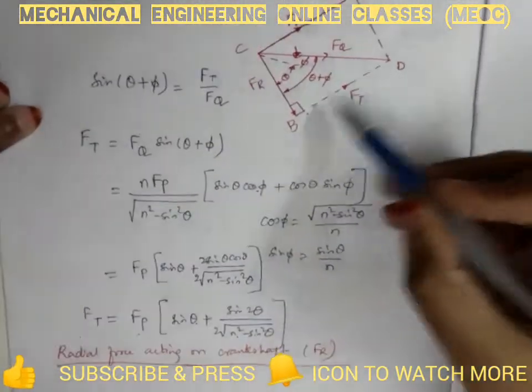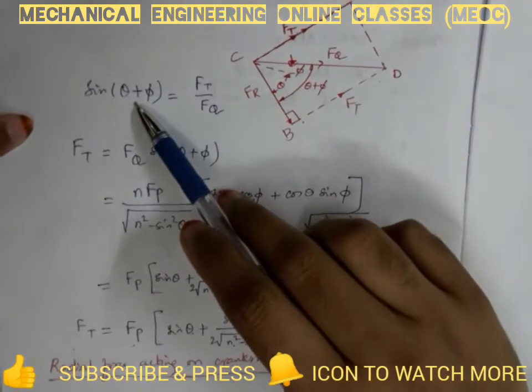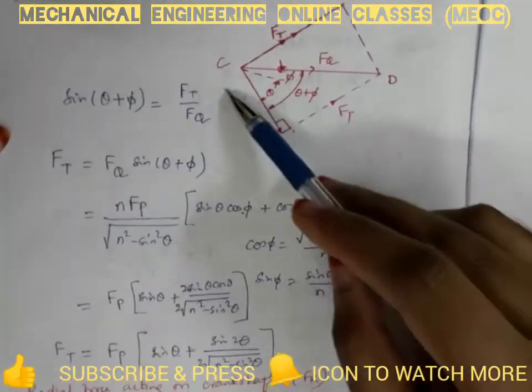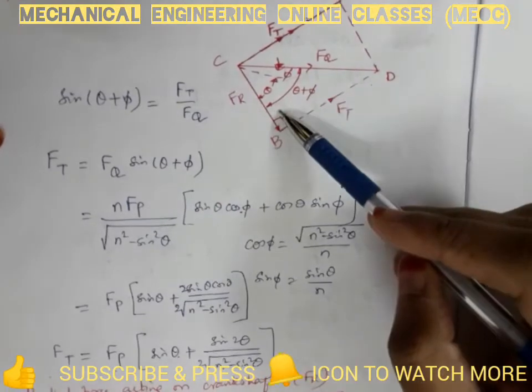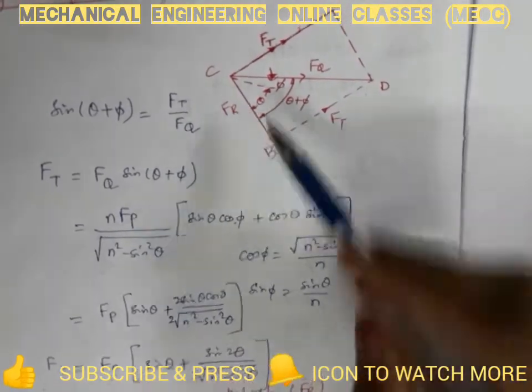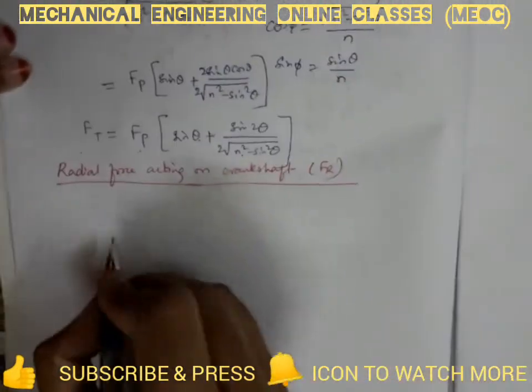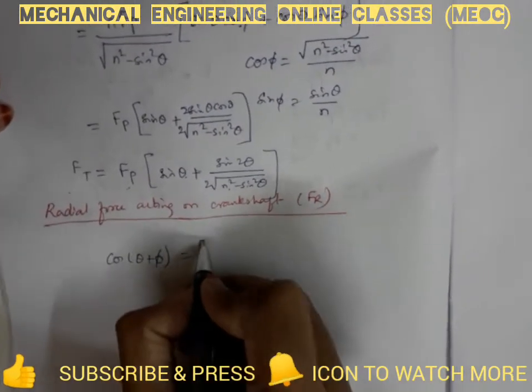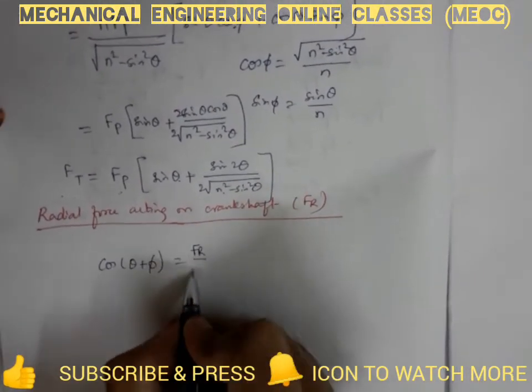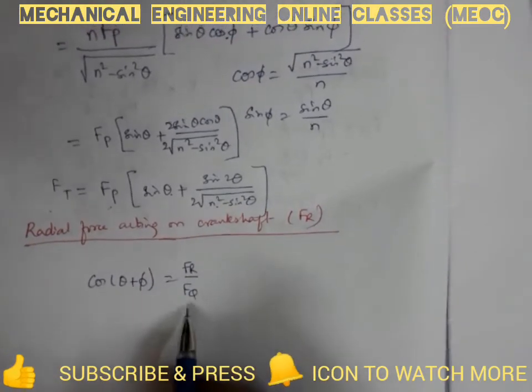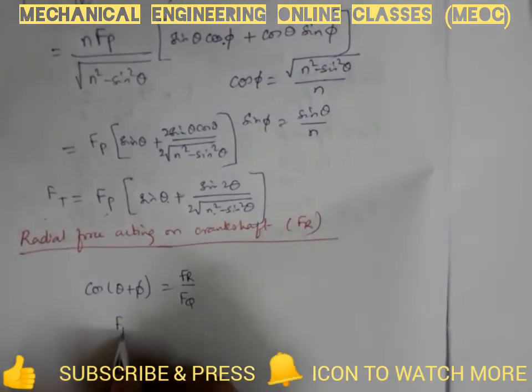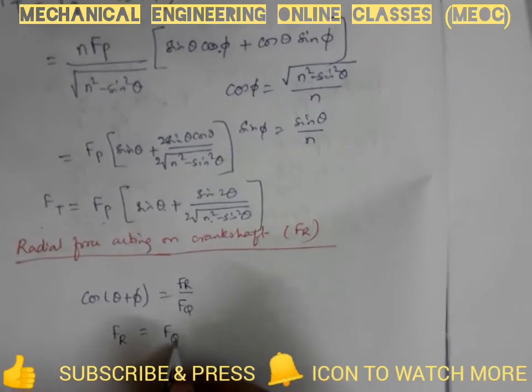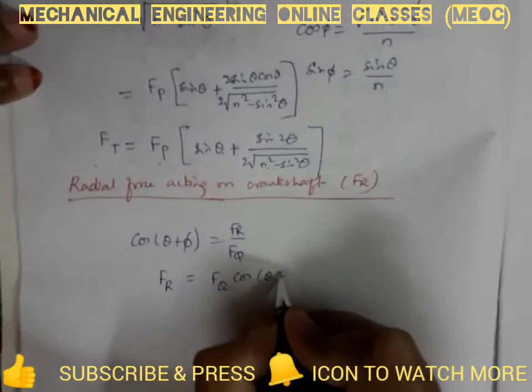To obtain Ft we have taken sine formula. To obtain Fr we have to use cos because this is theta plus phi and on adjacent side there is Fr. So we can write cos of theta plus phi as Fr which is adjacent side by hypotenuse which is Fq. Therefore Fr is nothing but Fq cos of theta plus phi.